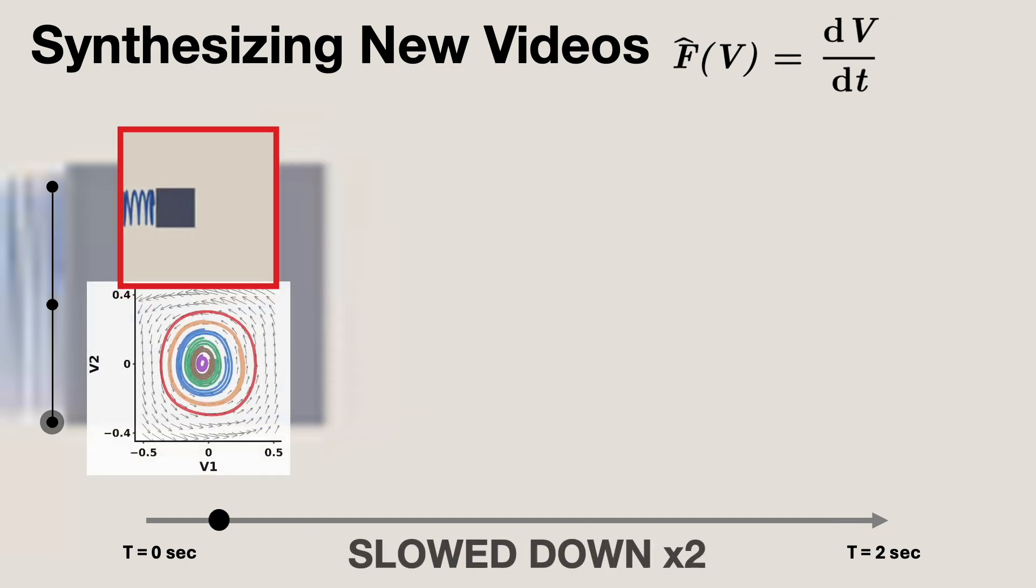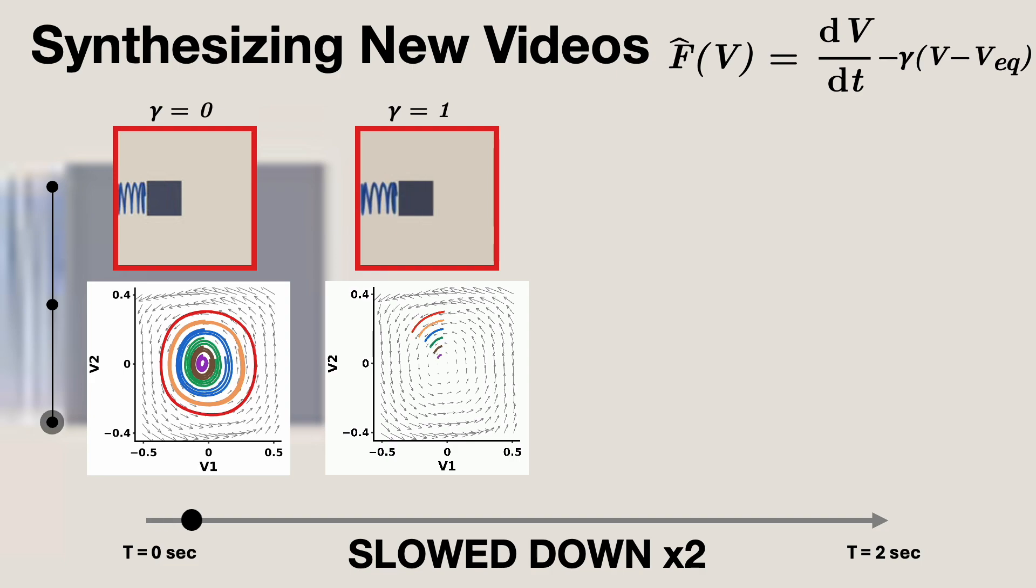Additionally, by leveraging our discovered dynamics such as the identified stable equilibrium, we can generate physically compliant synthetic videos by explicitly modifying system behaviors. For example, in this spring mass system,